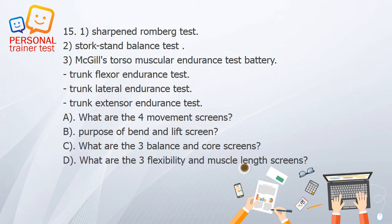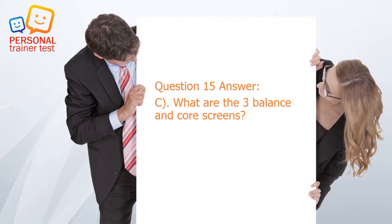Question 15. A. What are the four movement screens? B. Purpose of bend and lift screen. C. What are the three balance and core screens? D. What are the three flexibility and muscle length screens? Answer: C. The three balance and core screens are: 1. Sharpened Romberg test; 2. Stork stand balance test; 3. McGill's torso muscular endurance test battery — trunk flexor endurance test, trunk lateral endurance test, and trunk extensor endurance test.